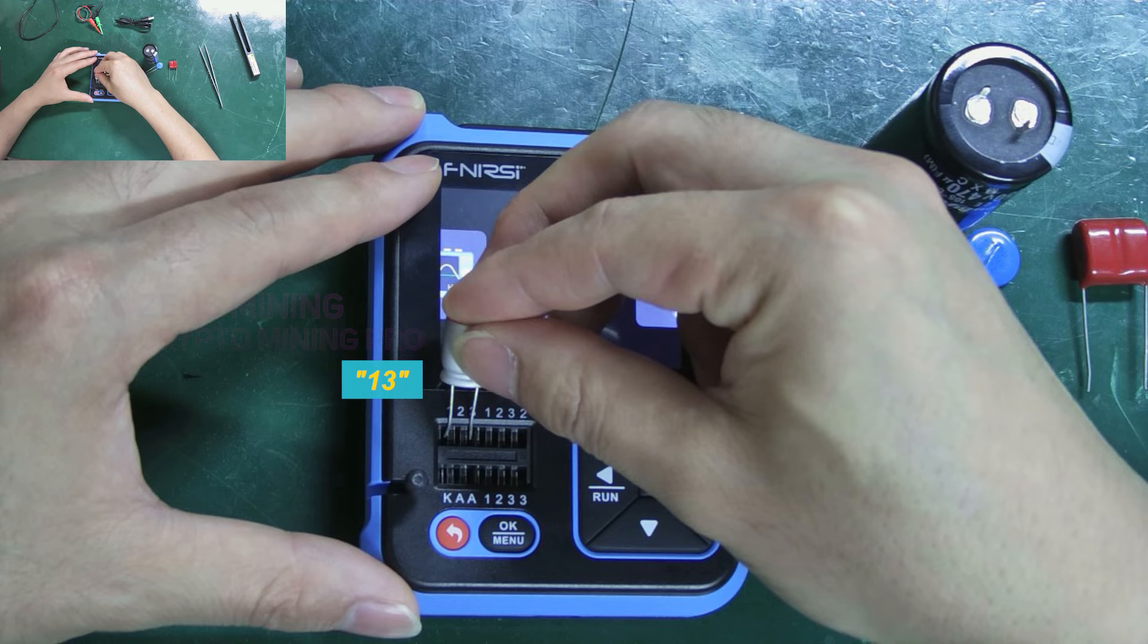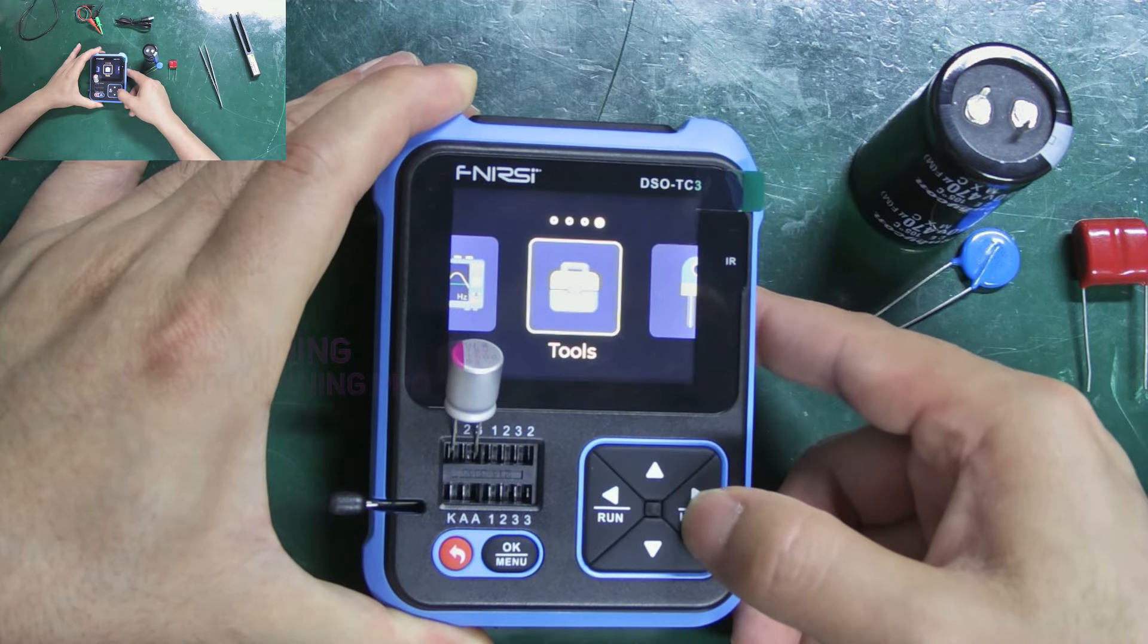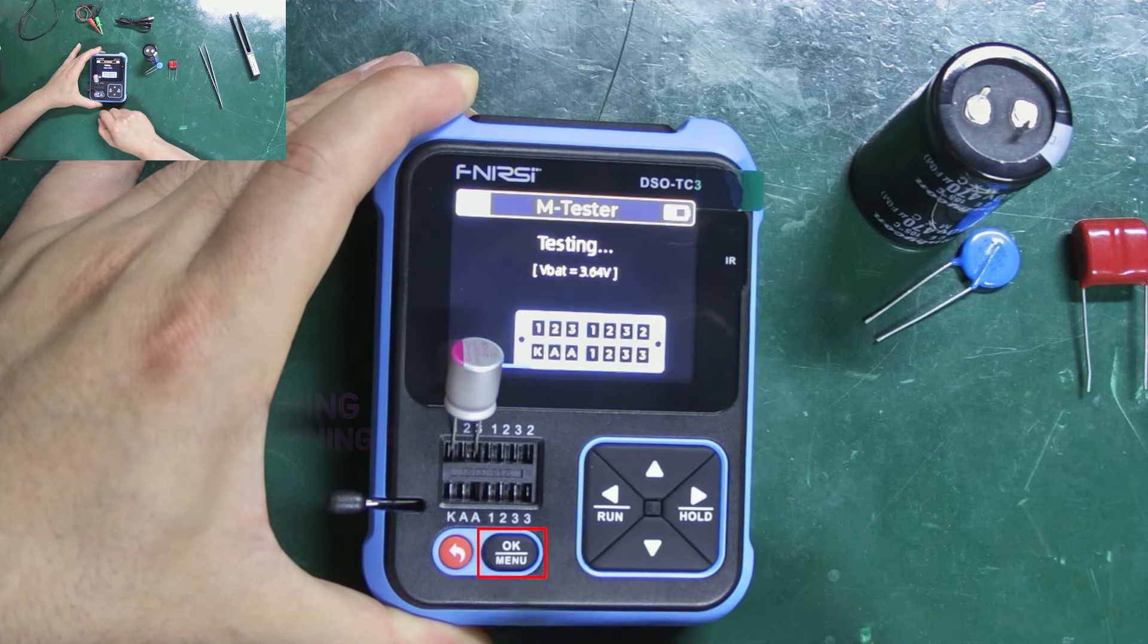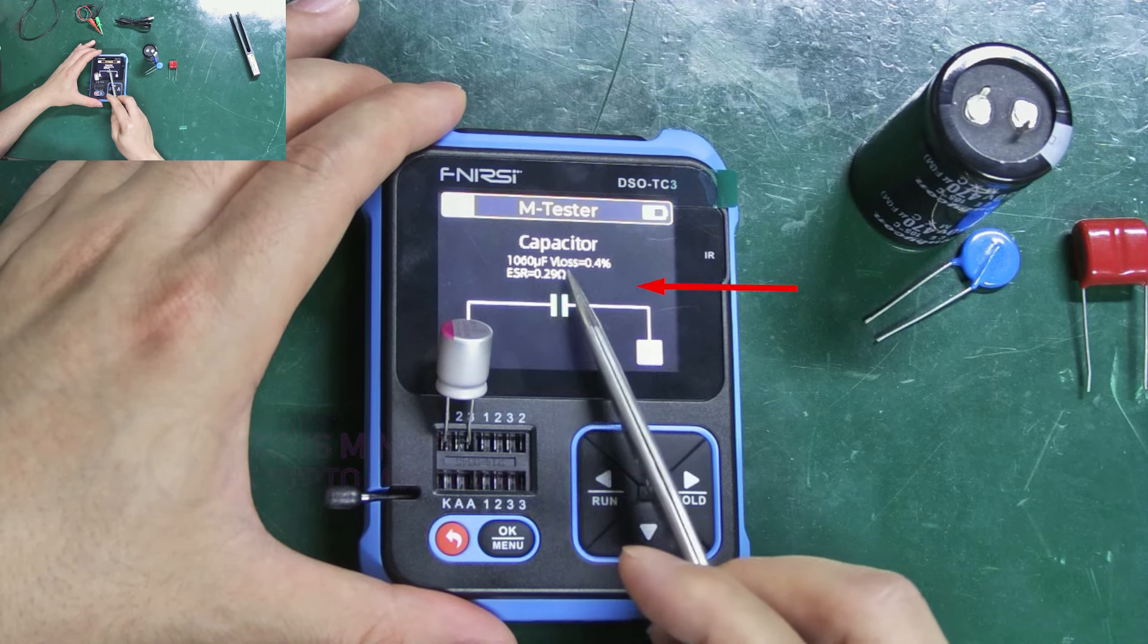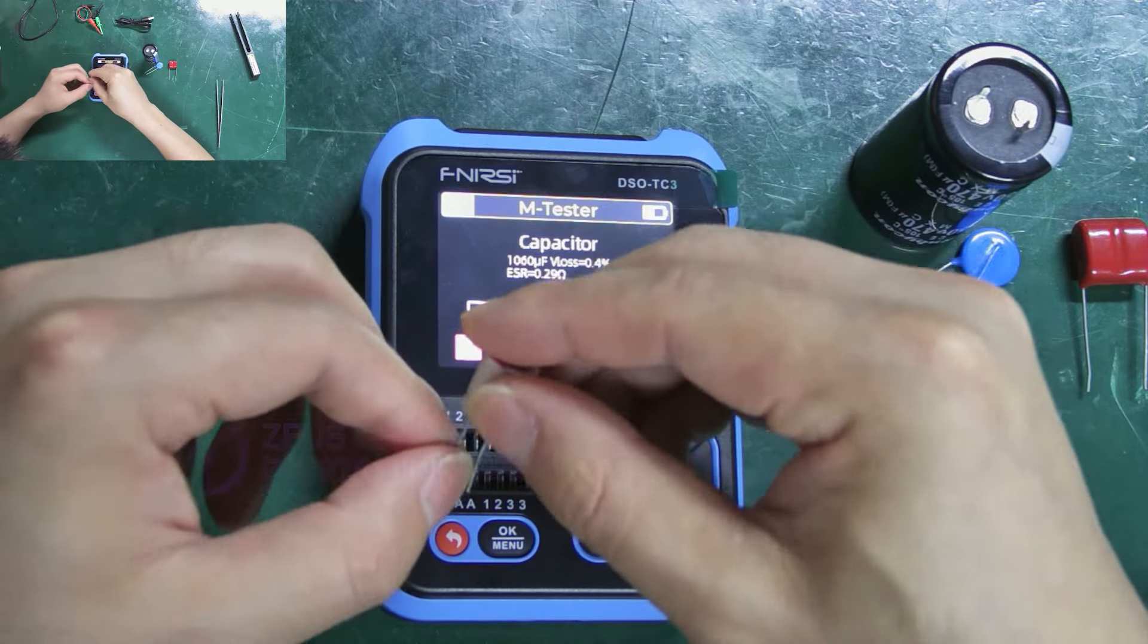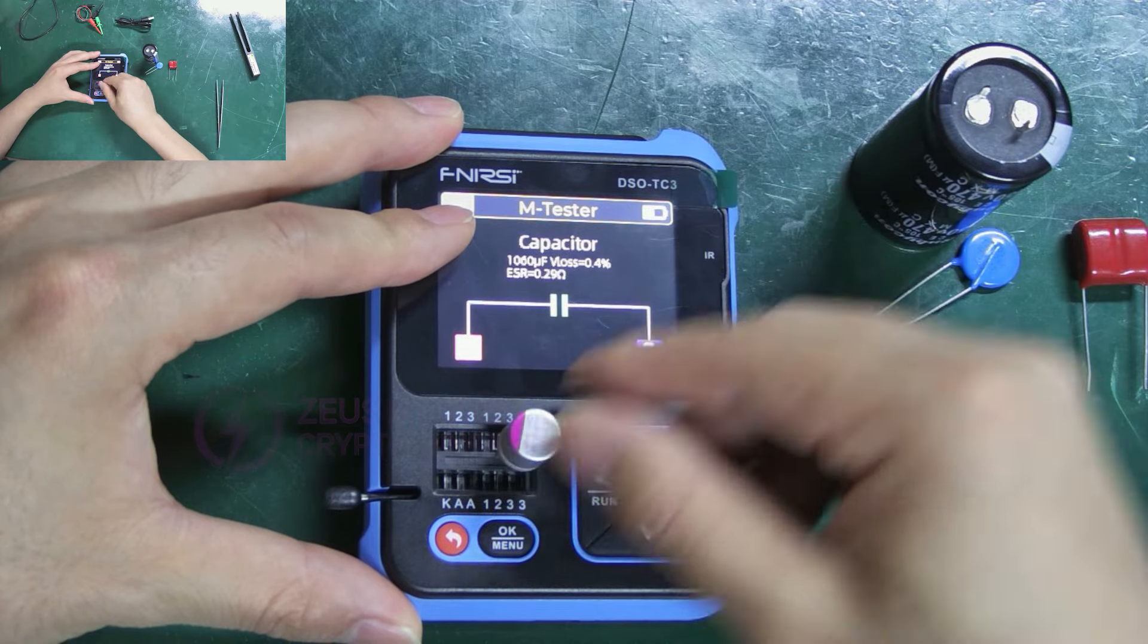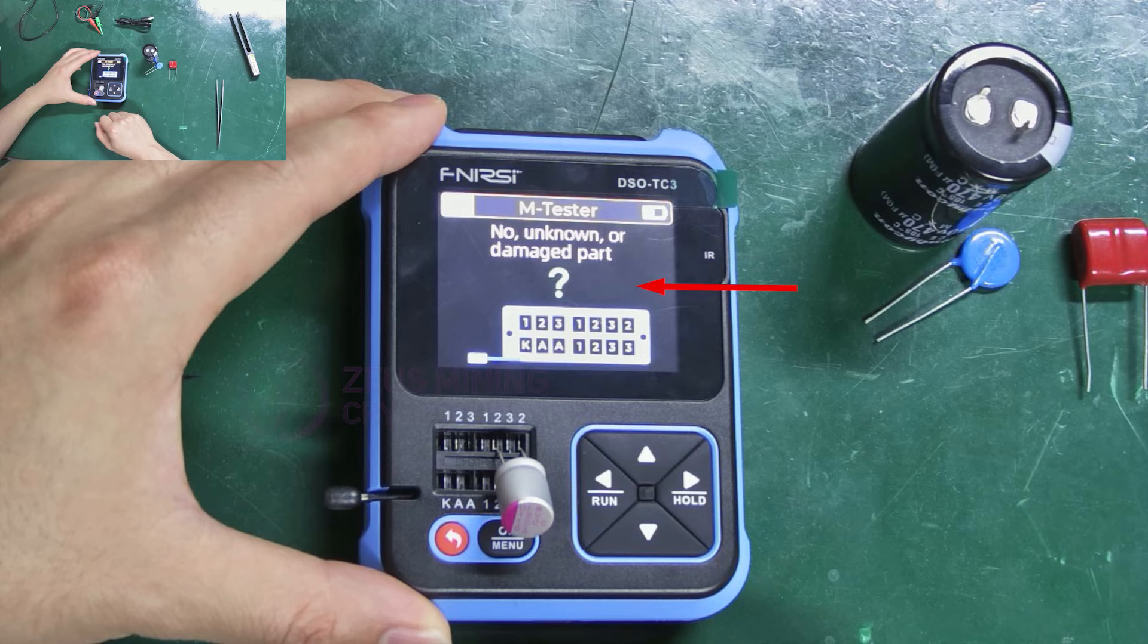Here we choose one-three and lock it in, then select the M tester, press the OK button and press again. We can see that the screen displays the capacitor's capacity and other information. Now let me demonstrate an error test. Select two-two and press OK. We can see that it's not possible to measure the capacity this way.